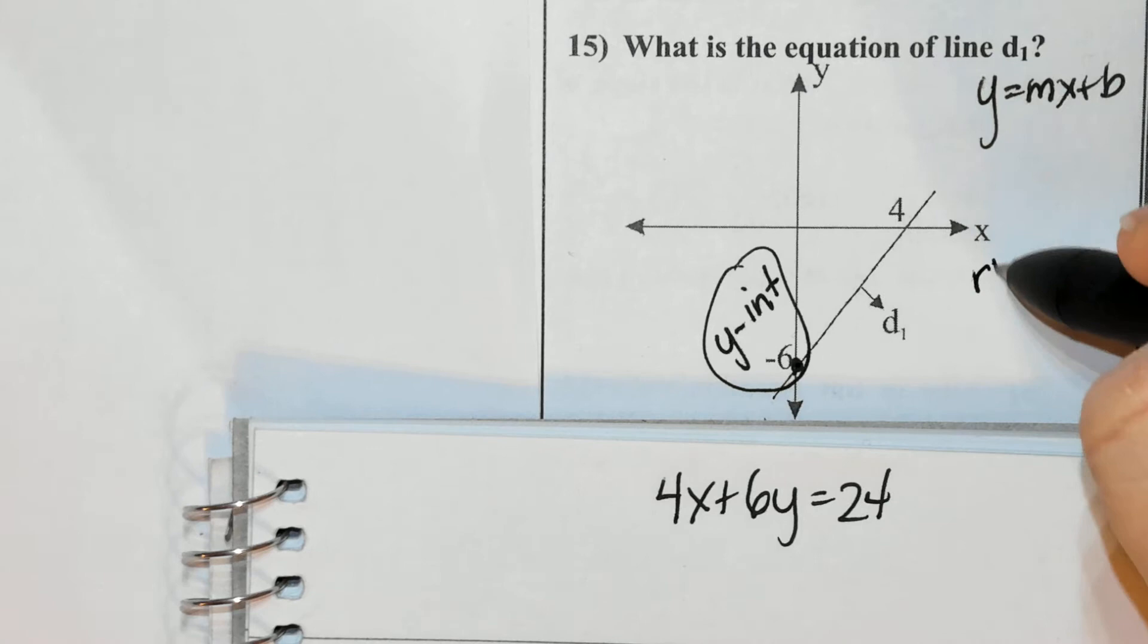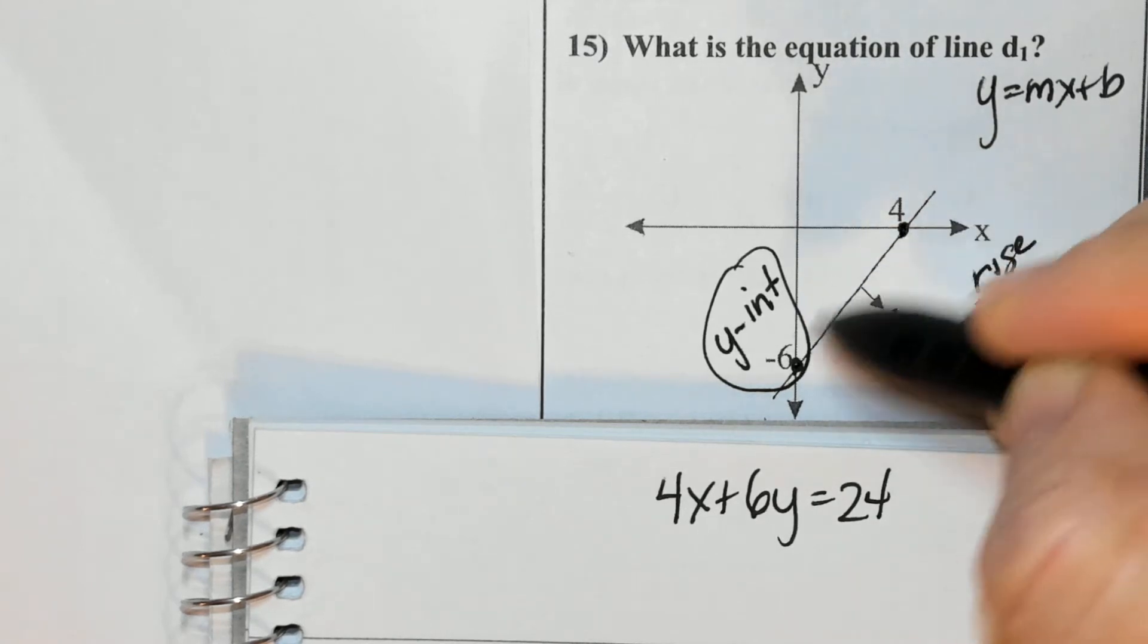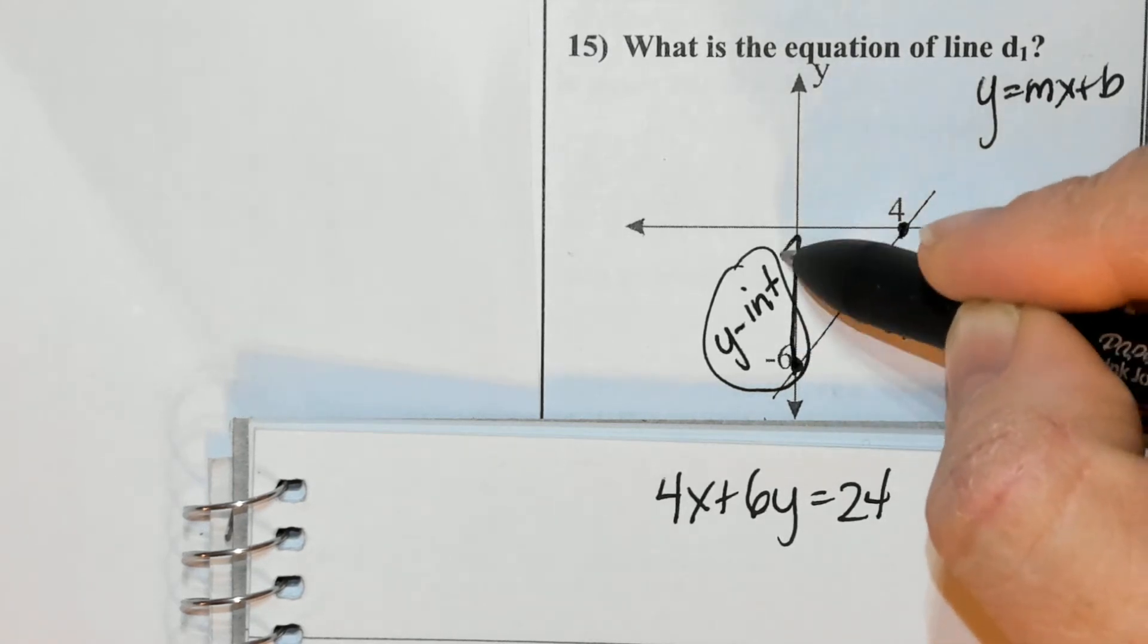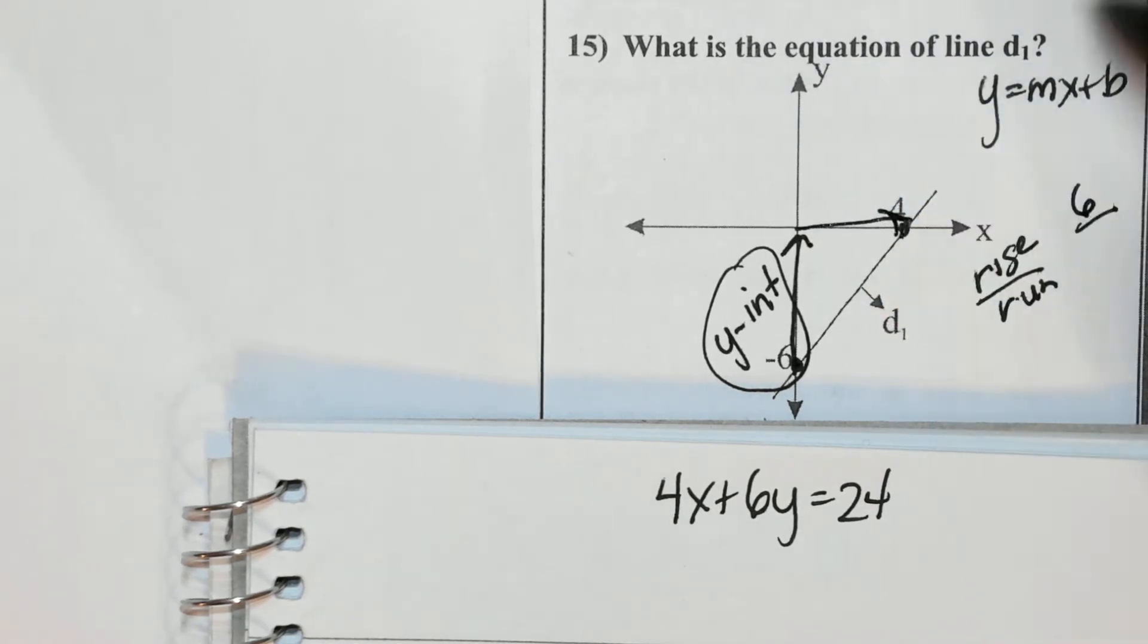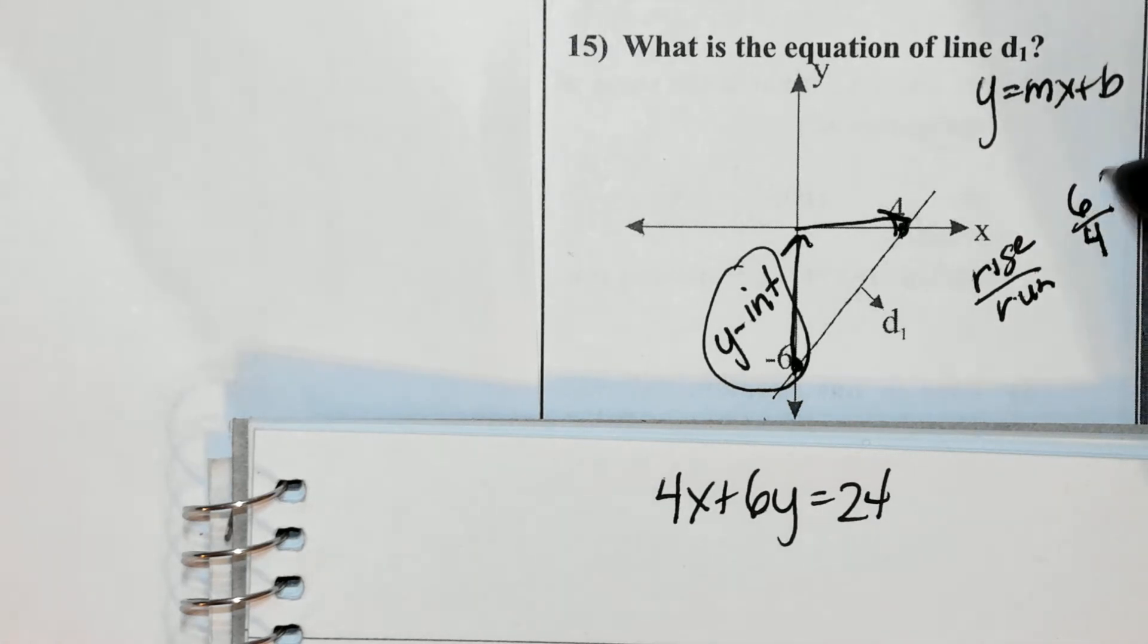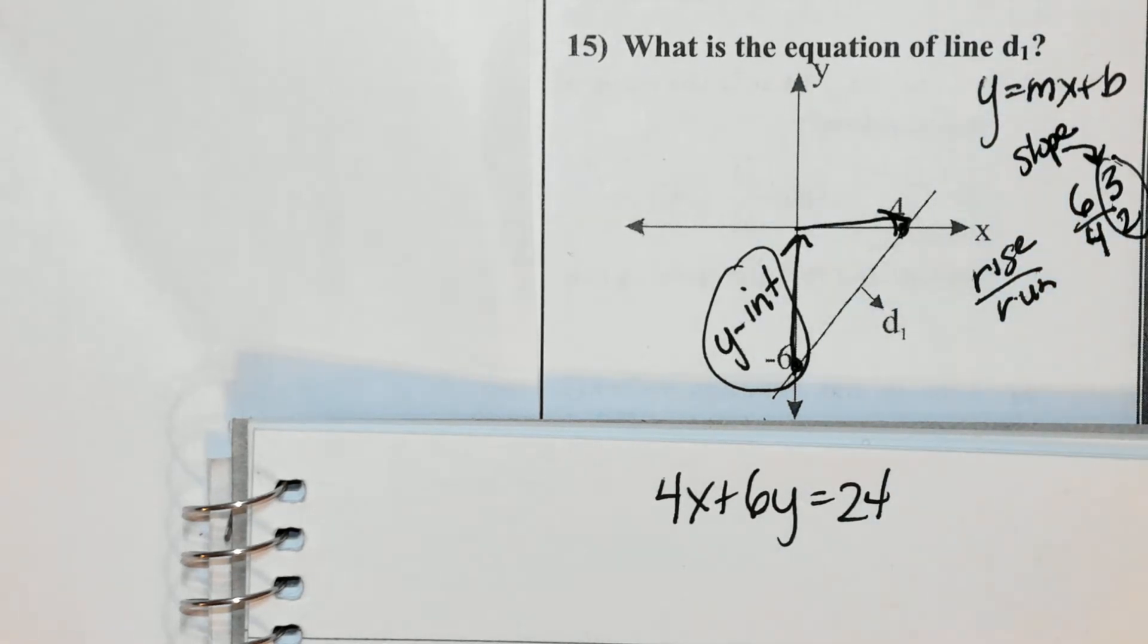Now, what is the slope? Remember, it's rise over run. And we look at the line from left to right. So from left to right, I have to go up 6. Since I'm going up, it's positive. And then to the right 4. Since I'm going to the right, it's positive. 6 over 4, you can reduce that, knowing that both of these are even. Divide by 2 to get 3. Divide by 2 to get 2. So my slope is 3 over 2, or 3 halves.